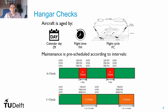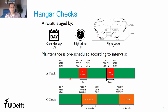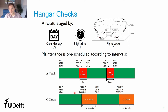For example, an A check for a medium-haul aircraft must be performed before reaching 120 calendar days, 750 flight hours, or 750 flight cycles since the previous A check. Once done, usage parameters reset to zero. Assuming about 10 flight hours per day, an A check is needed roughly every two and a half months. For C checks, intervals are much larger — around 730 calendar days, 7,500 flight hours, or 5,000 flight cycles — and can be even larger for modern aircraft.